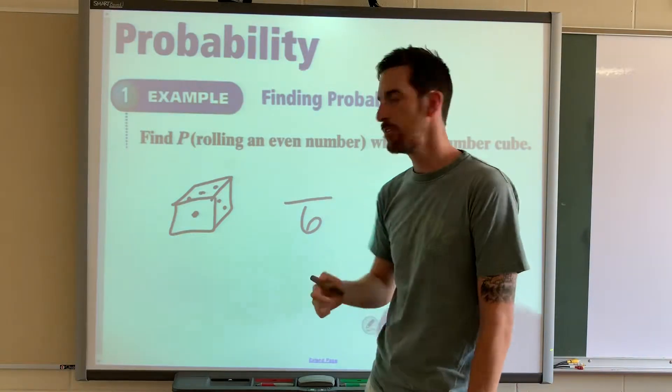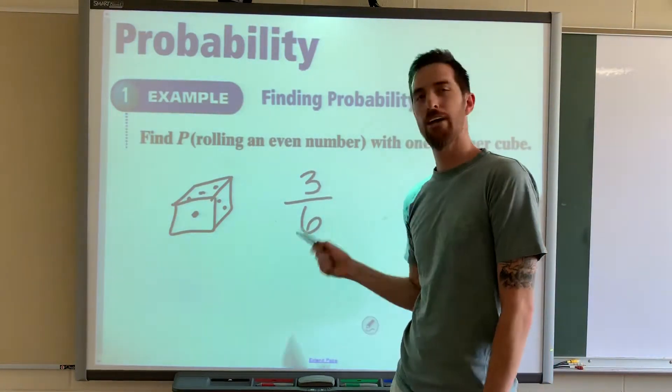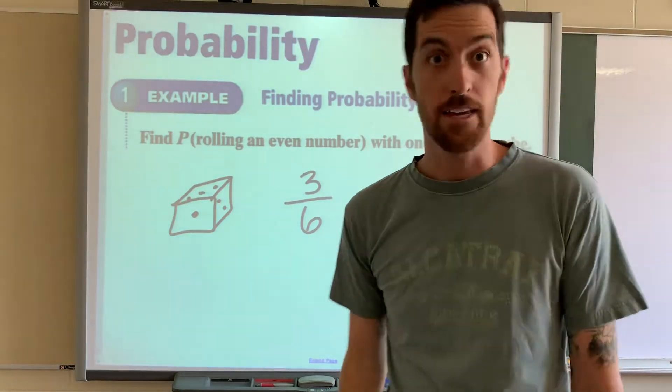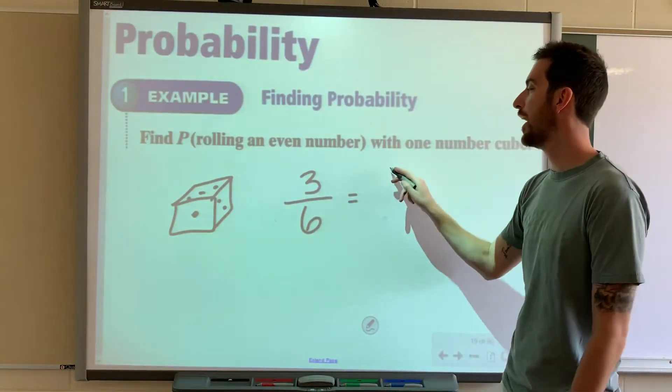Well, three of them would be two, four, and six. So we'll say the probability of rolling an even would be three out of six, but you got to reduce. Three over six reduces to one half.